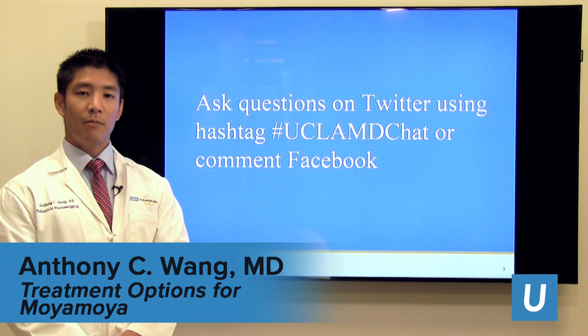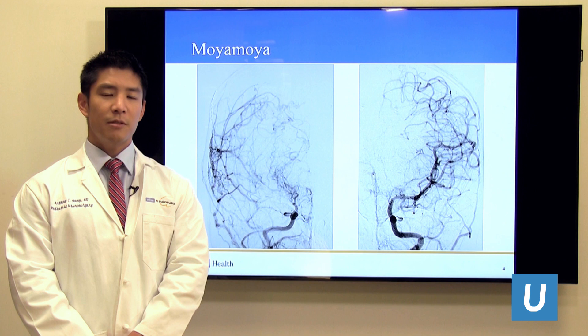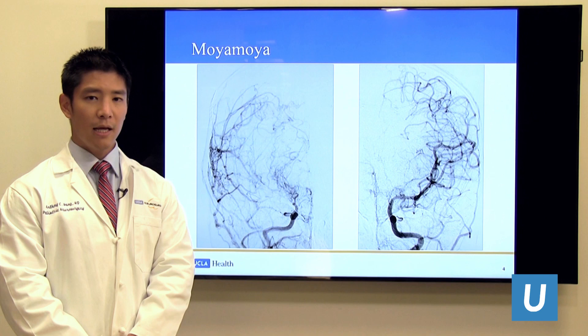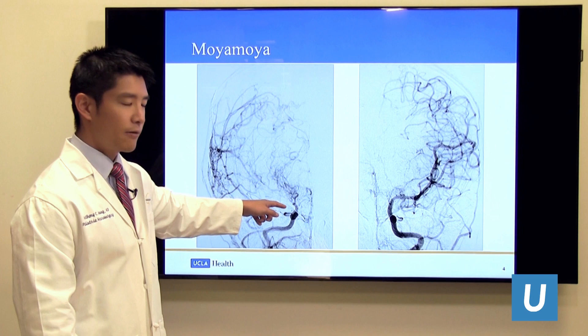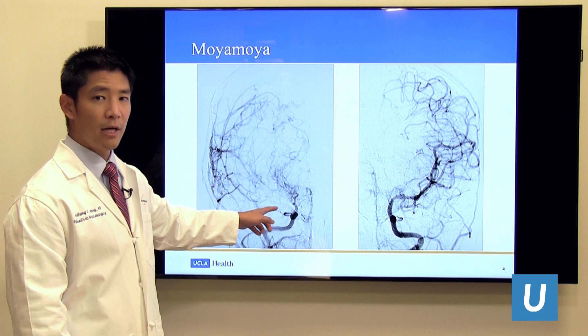The term Moyamoya means 'puff of smoke.' It was a nickname given by the Japanese who first described it, and it was used to describe this characteristic hazy appearance of collateral vessels that form when the main branches of the internal carotid artery that supply the brain collapse.